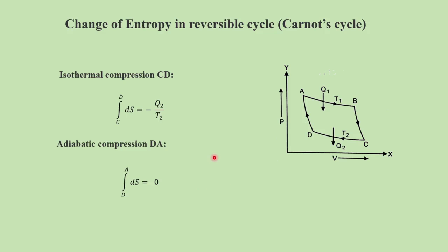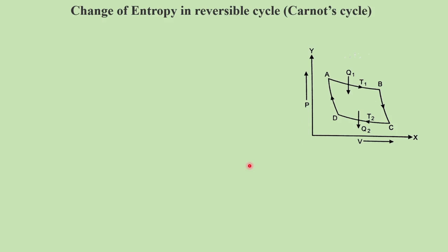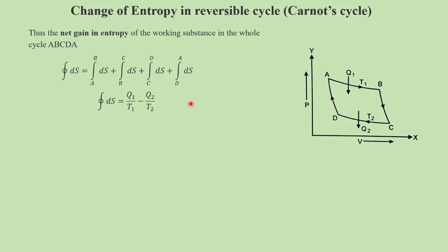To find the net gain of entropy for the working substance in the whole cycle A, B, C, D and back to A, we add up all these expressions. The net gain in entropy equals the integral of dS from A to B, plus B to C, plus C to D, plus D to A. Substituting all expressions, the integral of dS equals Q1 by T1 minus Q2 by T2, because the two adiabatic terms are zero.